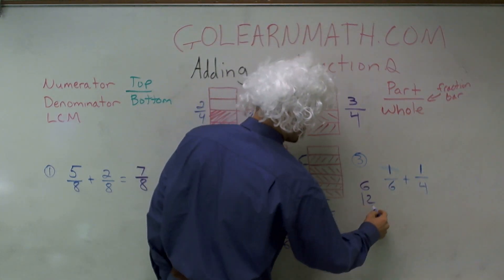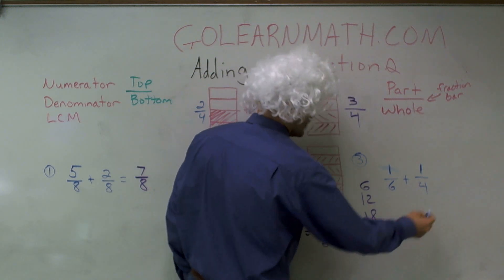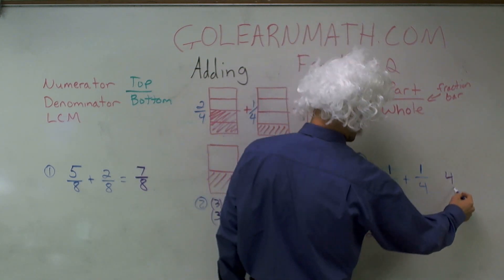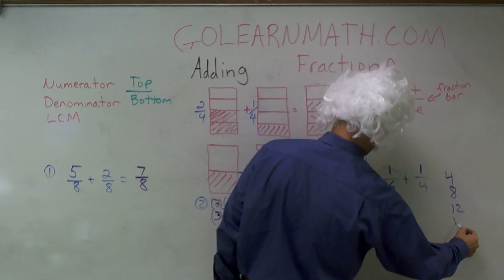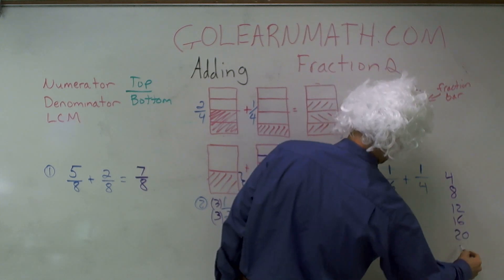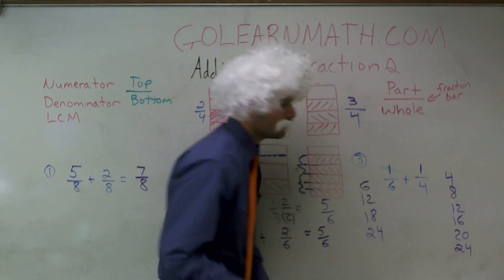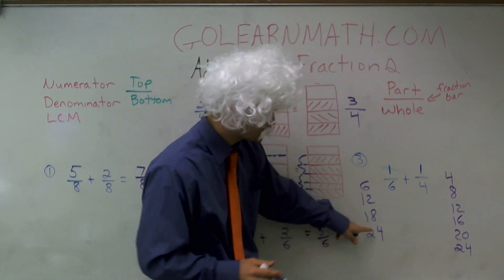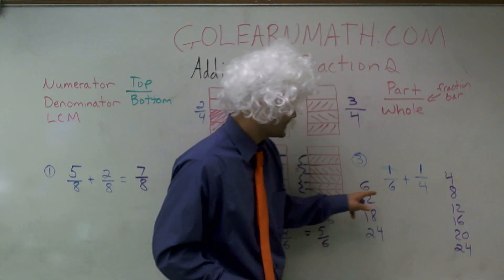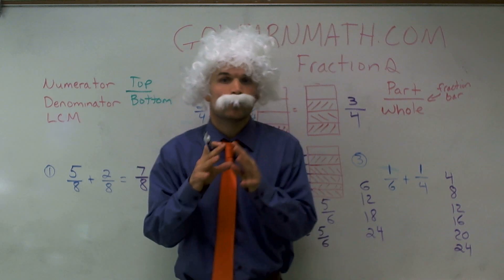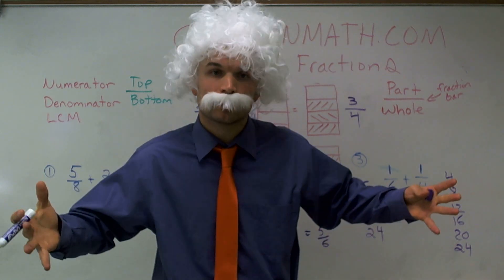So if I write the multiples of six: six, twelve, eighteen, twenty-four, and the multiples of four: four, eight, twelve, sixteen, twenty, and twenty-four. Now I wrote them down for you guys to notice. They both share twenty-four, but they also both share twelve. You want to make sure we're going to use the least common multiple.